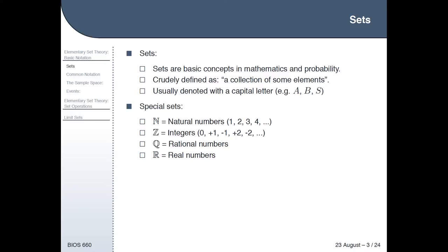Script Z is the integers, which in contrast to the natural numbers also include 0 and include negative numbers, so plus 1, minus 1, plus 2, minus 2, and so on.